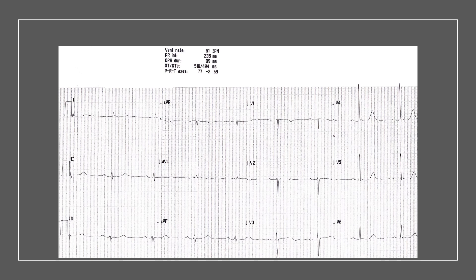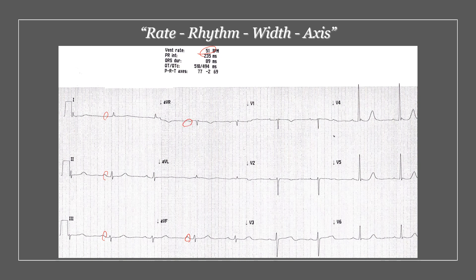Here's our ECG and let's start with the first four questions about the complex. What's the rate doing? What's the rhythm doing? What's the width like? And what's the axis doing? Looking at the rate, the rate here is 51. So we are on the slow side, we're on the brady side. And looking at the P waves, we've got an upright P wave in the limb leads and we have got an inverted P wave in AVR. So that is a sinus rhythm — we have sinus bradycardia.